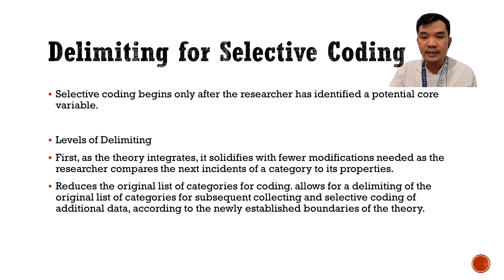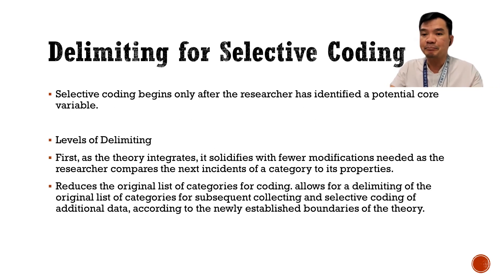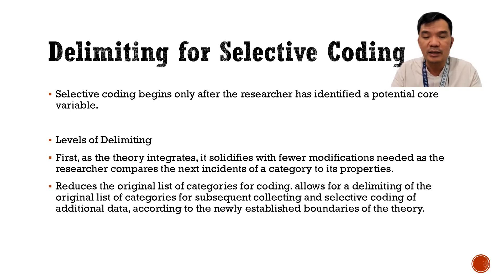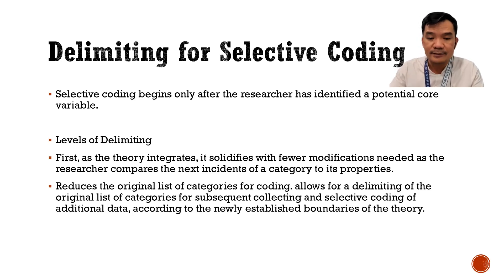The target for selective coding is that we can now determine whether our indicators of a particular concept derived from data are considered complete, or you have saturated them — meaning no other incident might come in the future, or your anticipation is that it can already describe the theory. It will always support the concept that you have identified.